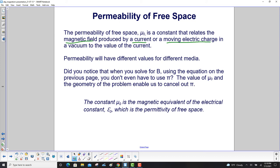μ₀, the permeability of free space, is a constant that relates the magnetic field produced by a current or a moving electric charge in a vacuum to the value of the current. Permeability will have different values for different media. We're dealing with the one in a vacuum, free space. When you solve for B using the equation on the previous page, you didn't even have to use π. The value of μ₀ and the geometry of the problem enable us to cancel out π.